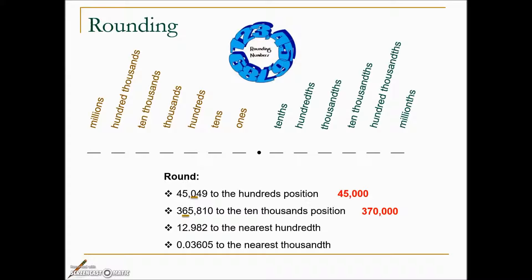The next number asks us to round to the nearest hundredth. In the hundredths position is eight. Immediately to the right is a two. This is not large enough to alter the eight. We drop the two entirely, so our rounded answer to the nearest hundredth would be 12 and 98 hundredths.